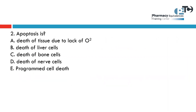The second question regards apoptosis. What is the meaning of this word? Apoptosis happens in our body — it is a system that removes dead cells. It is a programmed cell death that controls the removal of dead cells from our body.